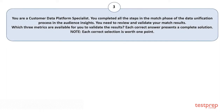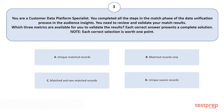Question number three: You are a Customer Data Platform Specialist. You completed all the steps in the match phase of the data unification process in Audience Insights. You need to review and validate your match results. Which three metrics are available for you to validate the results? Option A: Unique matched records. Option B: Matched records only. Option C: Matched and non-matched records. Option D: Unique source records.